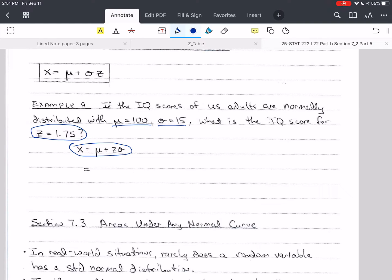So here I've written down my formula, and now I'm going to plug in. So mu is 100. And then I have a positive 1.75 for the z, and then sigma is 15. So 1.75 times 15 is 26.25. So this is 100 plus 26.25. The answer is 126.25.